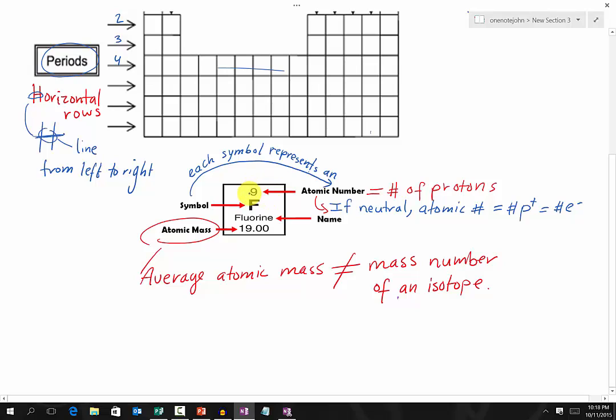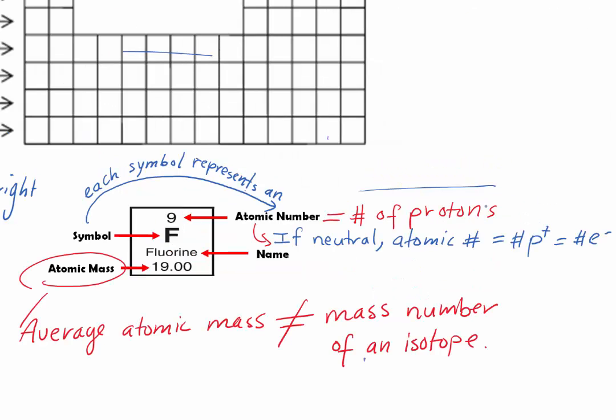That is your atomic number. Each element on the Periodic Table has its unique atomic number. And this atomic number is also equal to the number of protons. Remember this proton is a positive charge subatomic particle located in a nucleus, right?